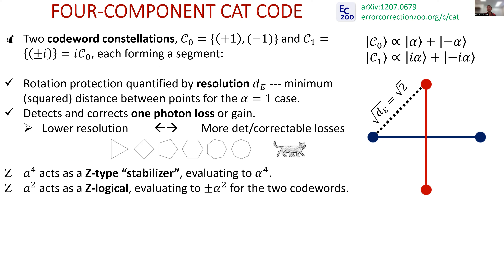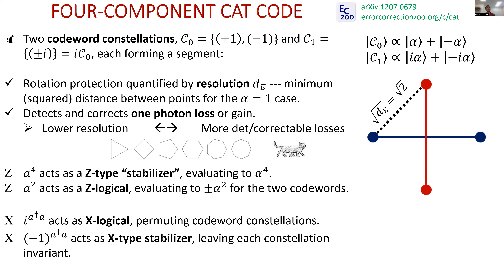For cat codes, the Z-type operators are powers of a: a^2 acts as a Z-type operator, spitting out +1 or -1 depending on which codeword it acts on. a^4 leaves both codewords invariant since the points are fourth roots of unity — those are your stabilizers. X-type logical operators are rigid rotations: rotating by 90 degrees maps the blue dumbbell to where the red one is and vice versa. The 180-degree rotation is a stabilizer because both code words aren't swapped. This is the structure of logical Pauli operations and stabilizers for cat codes.